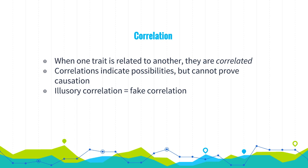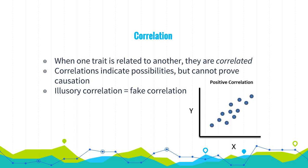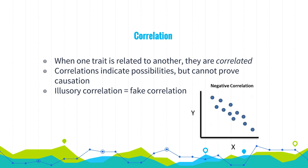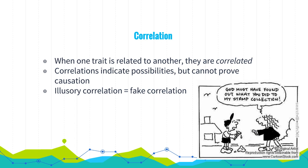Now we'll dive into correlations. When one trait is related to another, those traits are correlated. It's important to note that correlations are only indicative of possibilities — we can't use them to prove causation. Correlation doesn't prove causation. We have an example of a positive correlation where both sets of data increase or decrease together. There are also negative correlations where one set of data rises while the other falls. Finally, illusory correlations are basically fake correlations — a perceived but non-existent correlation between two things, like random coincidences we perceive as related.